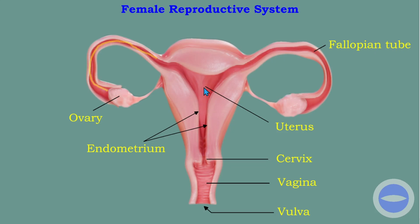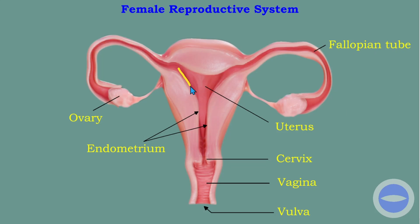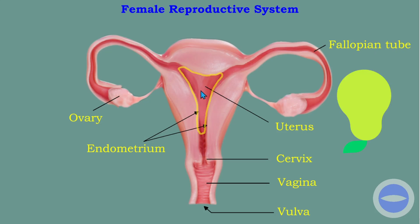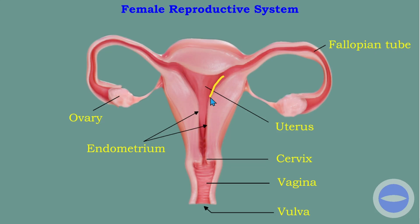Another part is the uterus — a hollow, pear-shaped organ. If you look at it closely, this part looks like a pear. The endometrium is the lining inside the uterus. Endometrium is not a permanent thing; every 28 days, a new endometrium is formed.